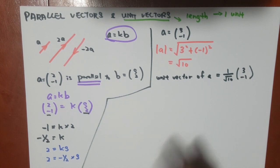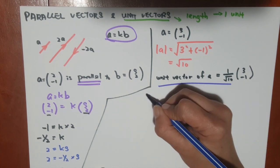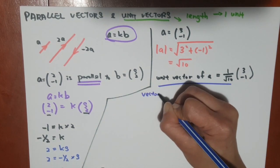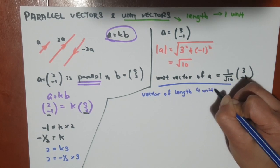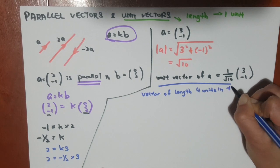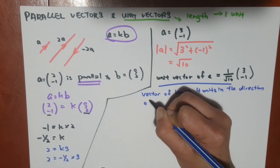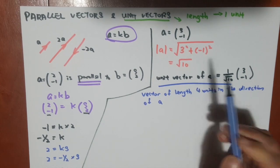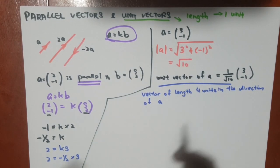So if this is 1 unit, how do I find a vector of length 4 units? That's another question, a vector of length 4 units in the direction of a. So I need to find a vector in the direction of a, but it is in 4 units.